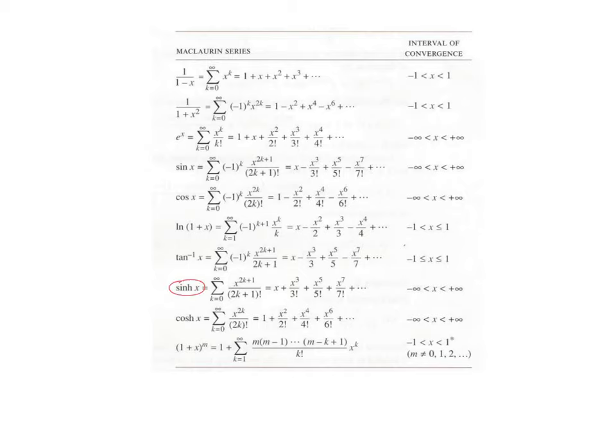The only thing to do with this slide is take a screenshot and commit it to memory. These are the hyperbolic functions — we are not going to deal with those. There's also a binomial series form we won't cover. The remaining ones I would commit to memory as they all look useful. Keep in mind they are all Maclaurin series, although the Taylor series equivalents would not be much more difficult to determine.